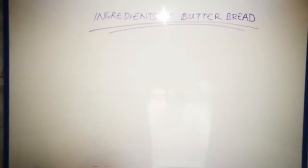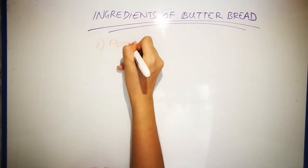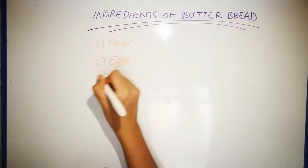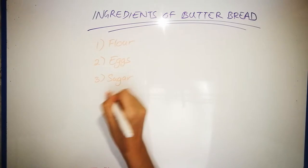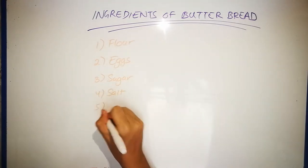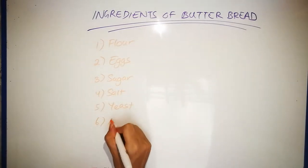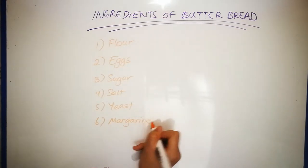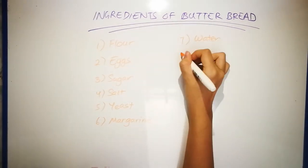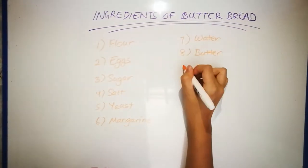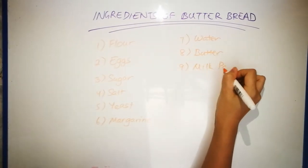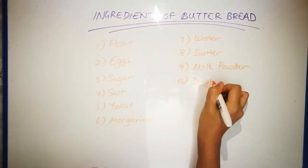You may ask what are the ingredients needed for butter bread. Firstly, we have flour, eggs, sugar, salt, yeast, margarine, water, butter, milk powder, and lastly, dough conditioner.